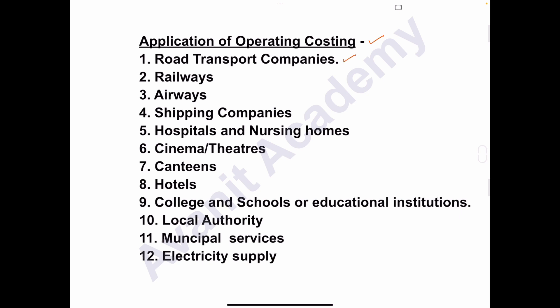Applications of operating costing include: road transport companies, railways, airways, shipping companies, hospitals and nursing homes, cinema or theatre, canteen, hotel, college and school or educational institutions, local authority municipal services, and electricity supply. All these undertakings adopt operating costing method to find out operational cost or cost per unit.